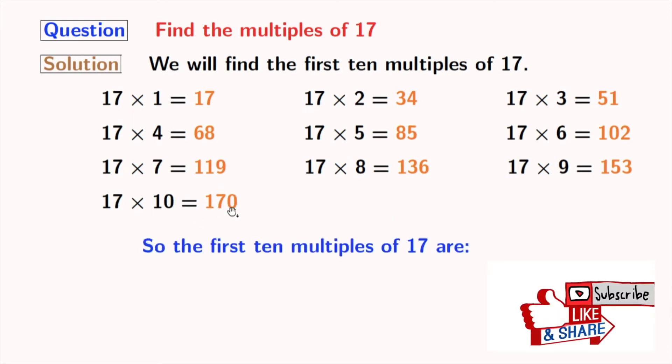So, here are the first 10 multiples of 17, which are the orange ones.